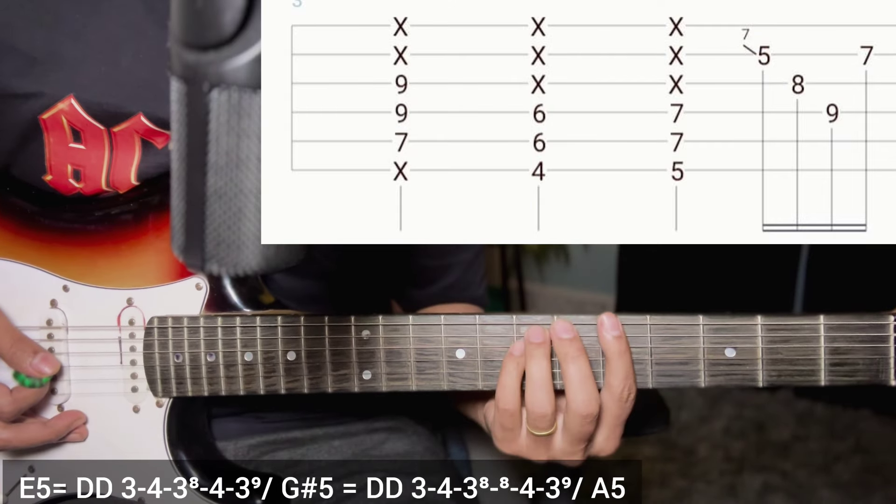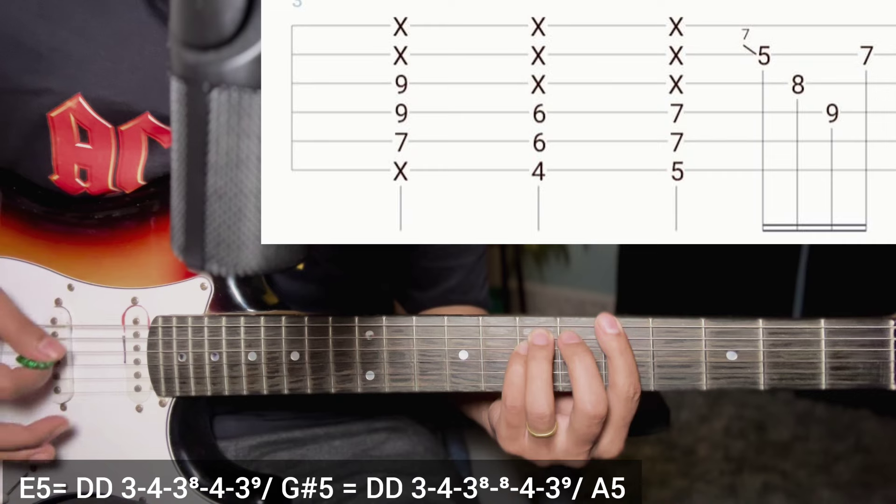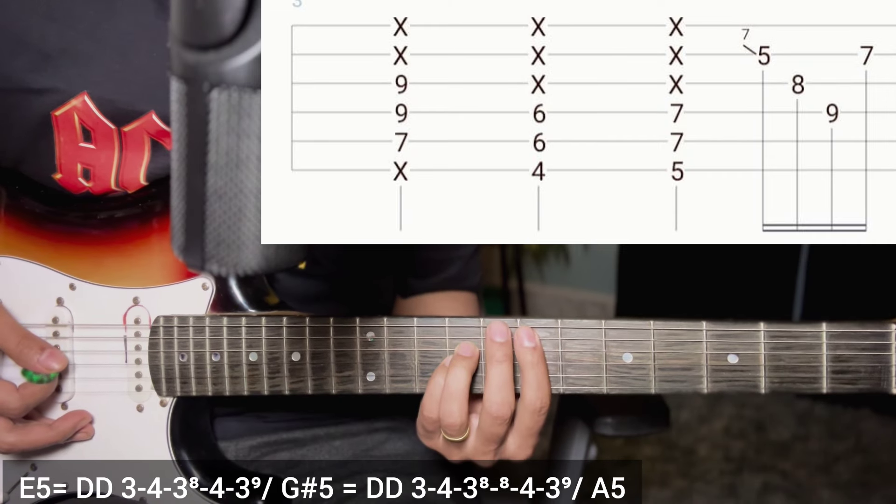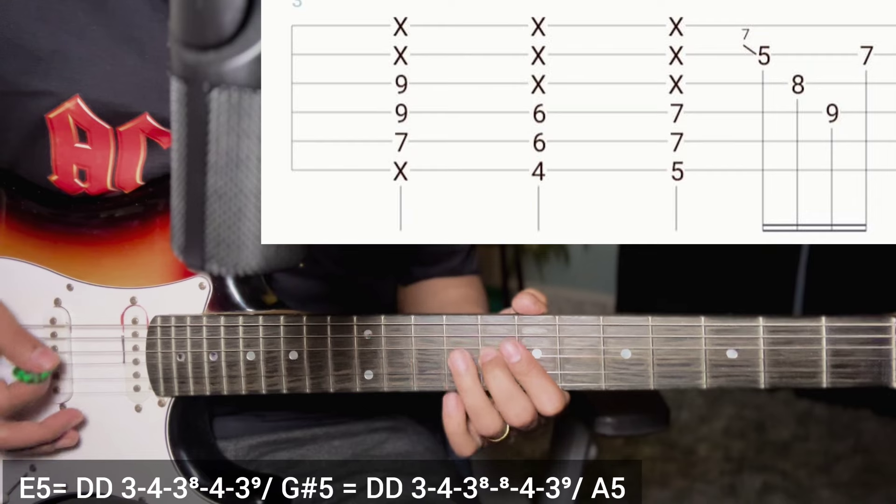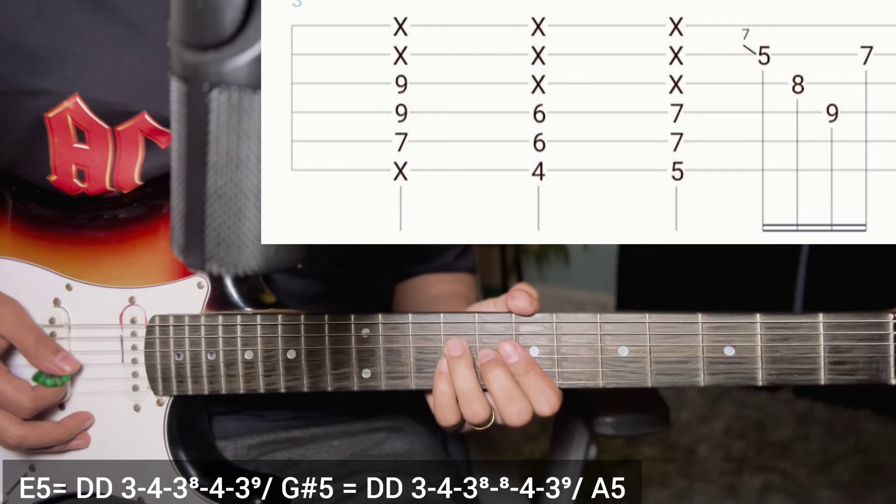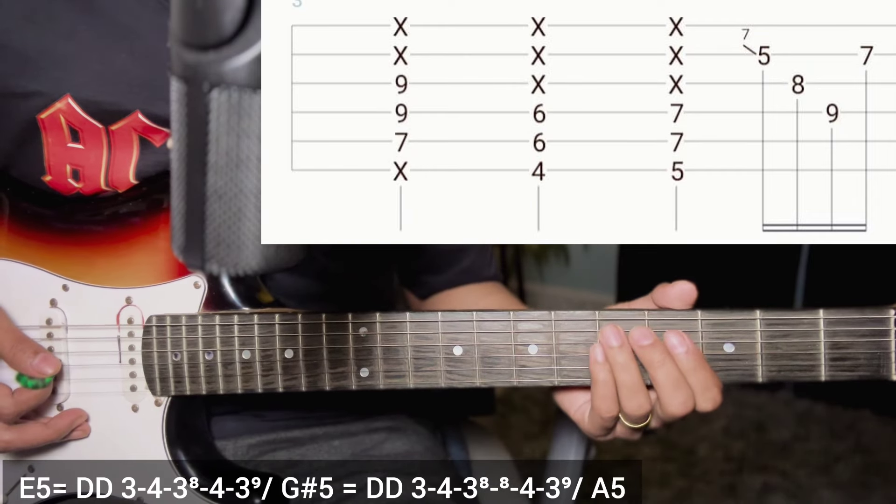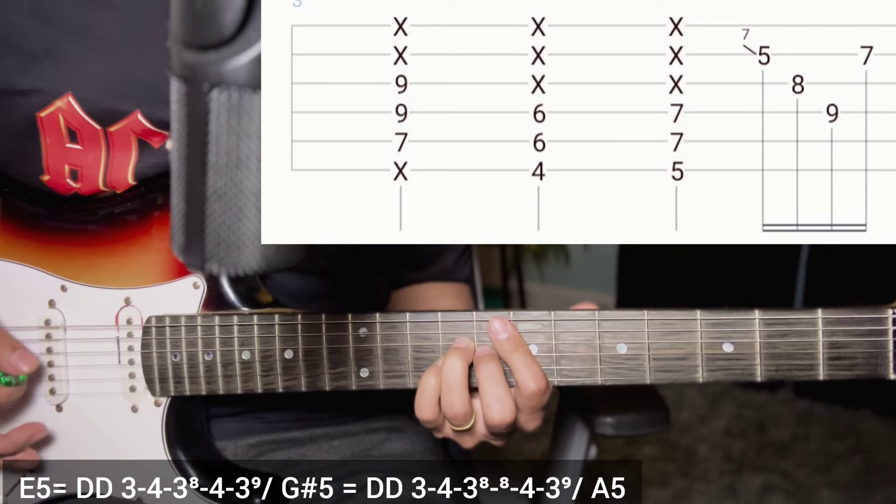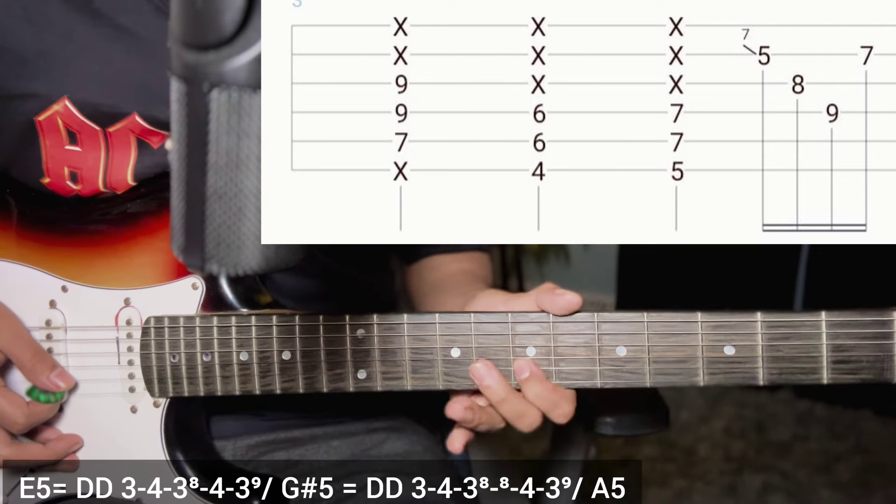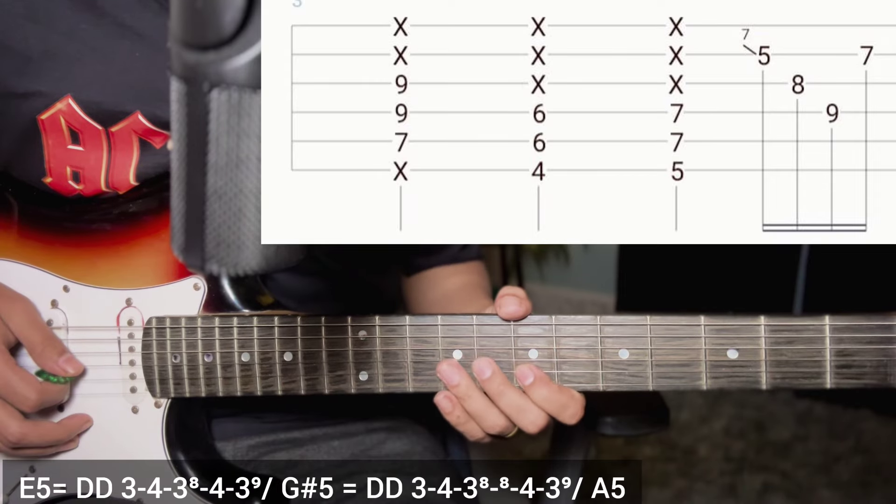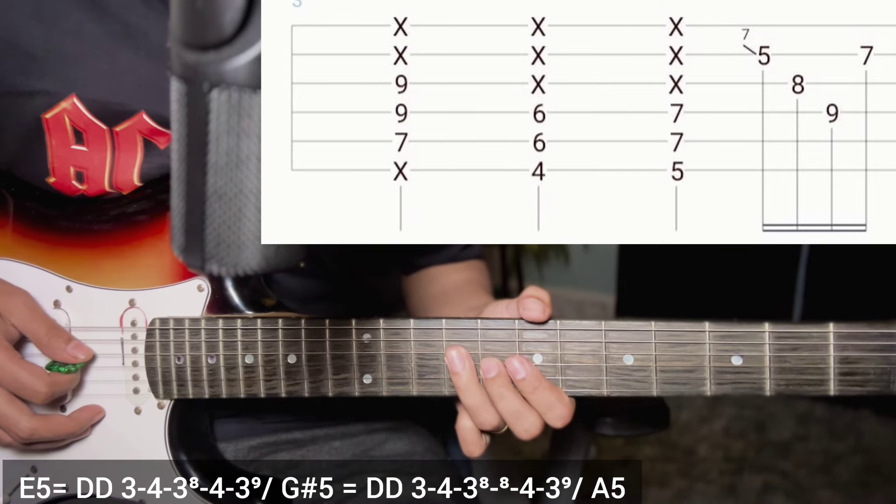E5 power chord, down down, back to E5 power chord. Three four, fourth string eight, fourth string nine. E5 by E5, seven note sliding on second string. Five, seven, seven eight, fourth string nine.